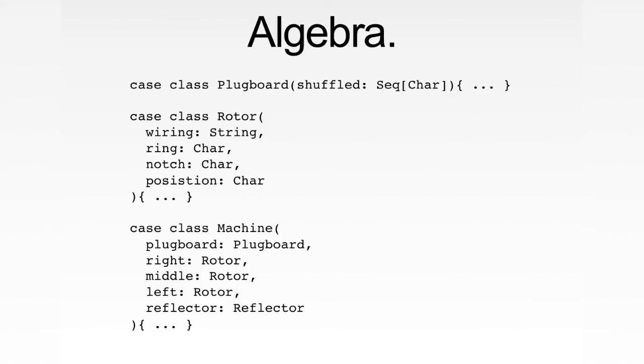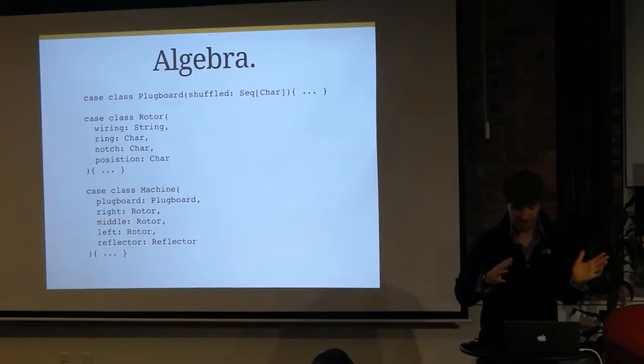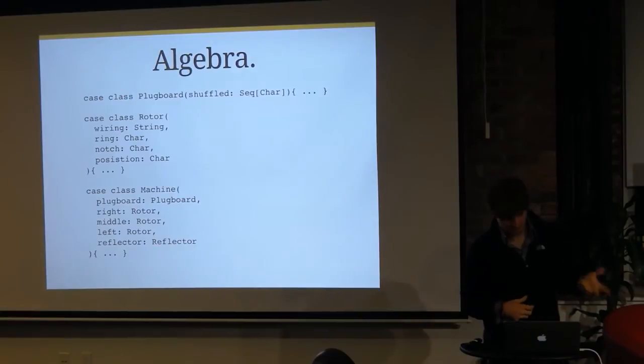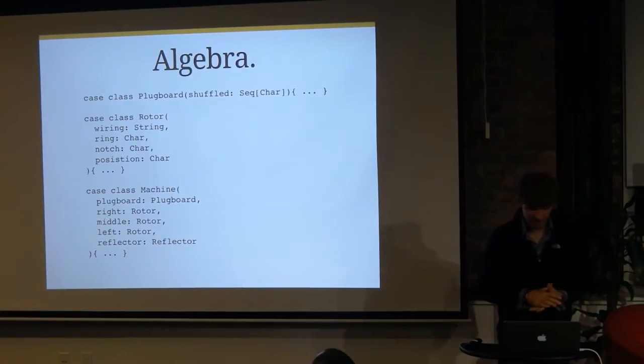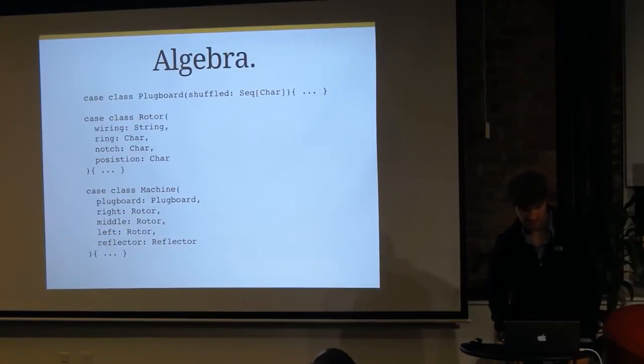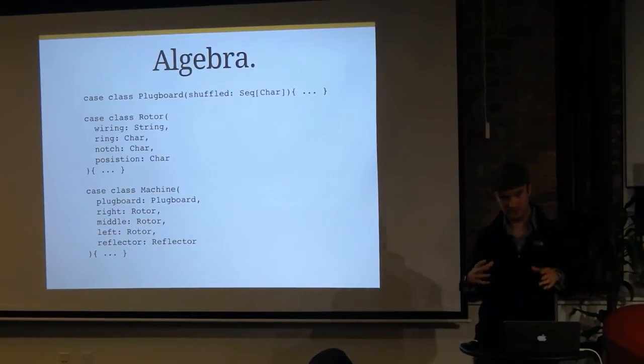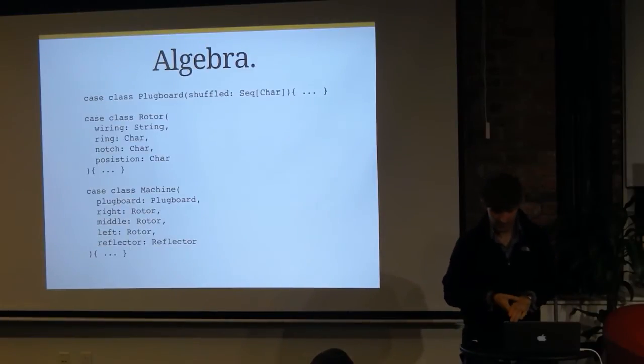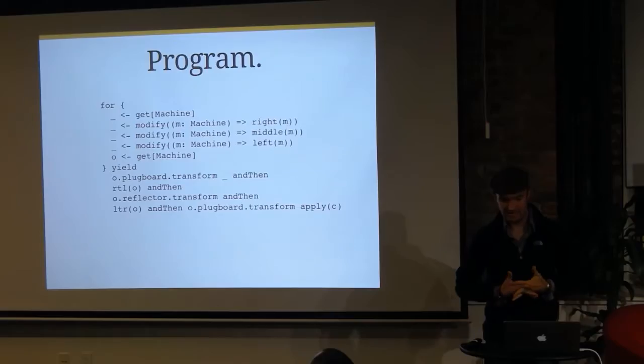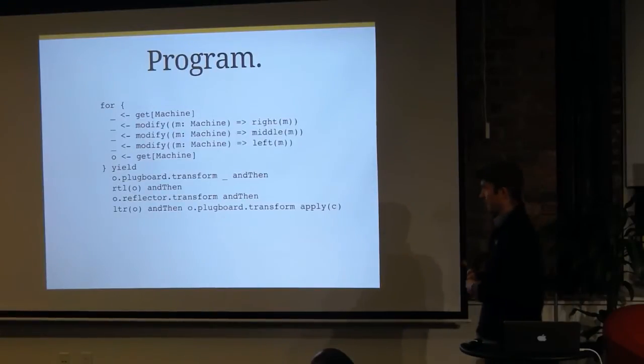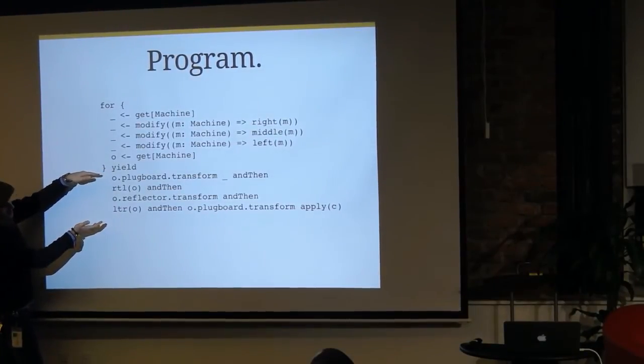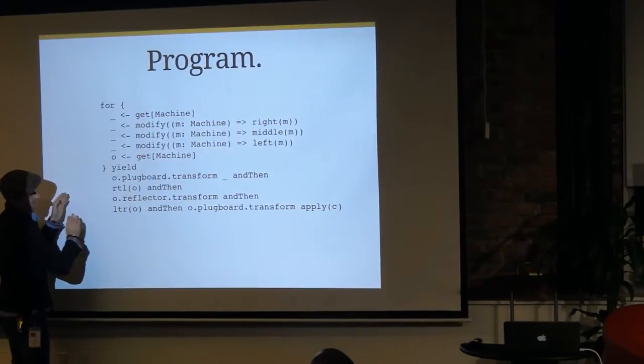So, we've swapped some code. We start to model this using case classes. We build an algebra for, okay, here's my rotor. The properties of a rotor are: what wiring does it have, where's this ring configuration, what notch is the turnover notch, and what position am I currently on? So, evidently, this will allow us to have an immutable representation of our Enigma machine and allow us to basically compose a pipeline of functions that will execute one-letter transformation.